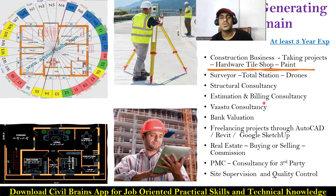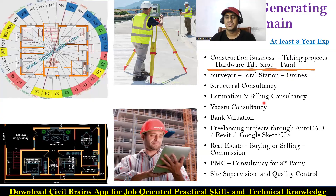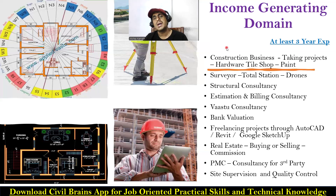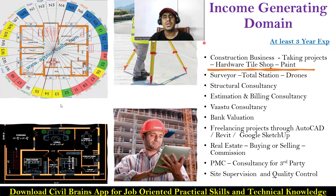These are the different options where you can start to earn an additional source of income. You need at least two to three years of experience — as a fresher it's difficult because people need to see what you've done. So work for at least two years, and after that slowly plan and try to get into all these fields. I hope you enjoyed the lecture and got an idea of the different income-generating domains in the construction industry. There may be other fields too — if you know something, you can do that as well. I'll see you in the next lecture. Thank you.